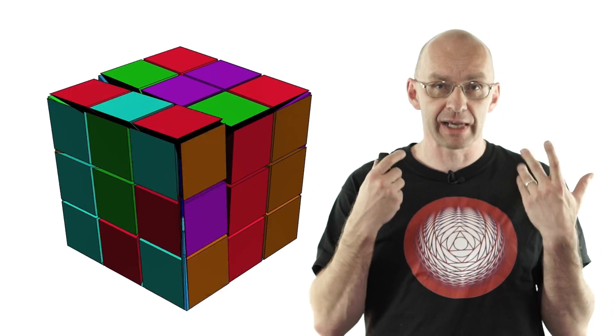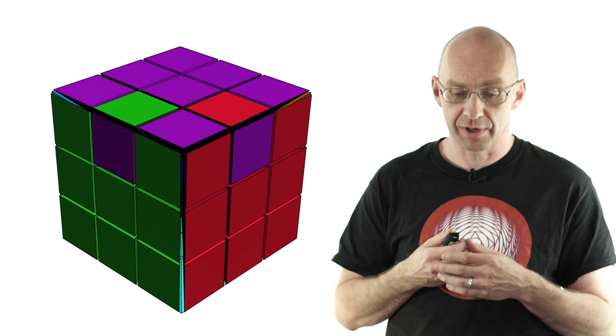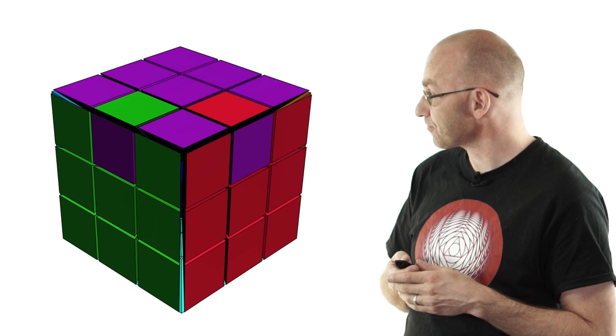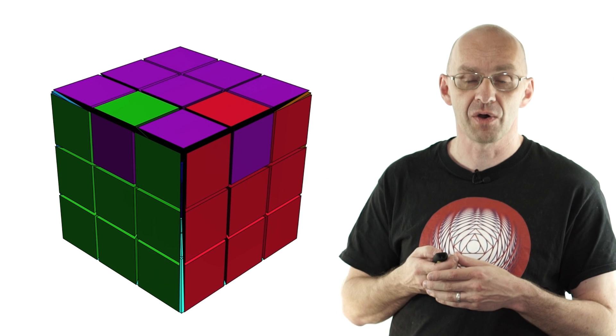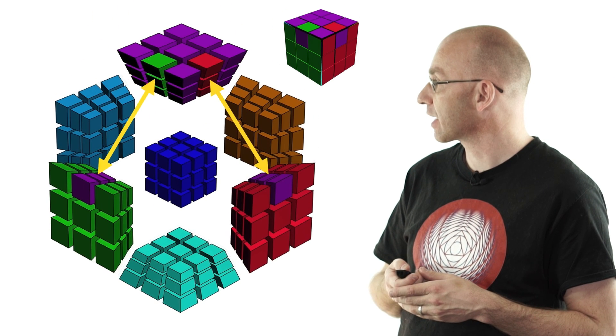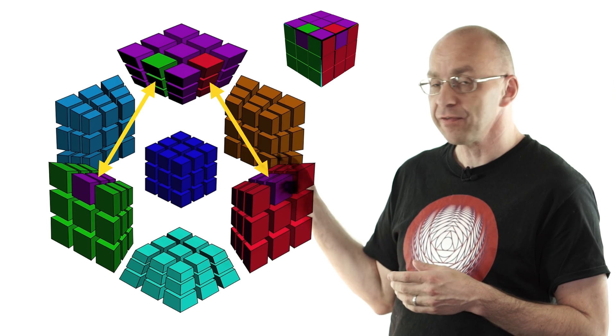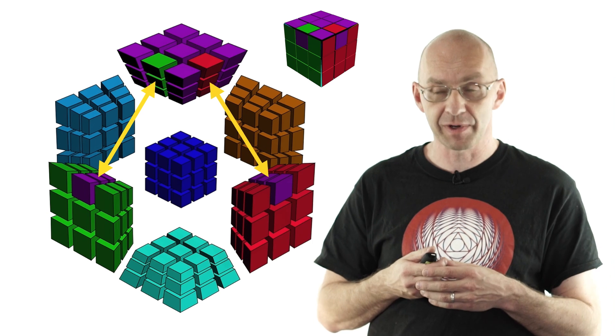Now what I do here is I'm actually executing one of those algorithms, 3D Rubik's Cube algorithms on it. That was the one that flips edges. And let's just see what effect it had on the 4D Rubik's Cube.